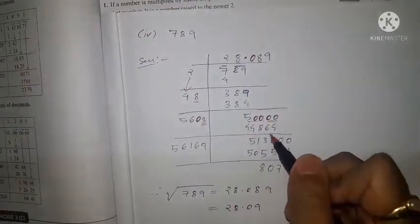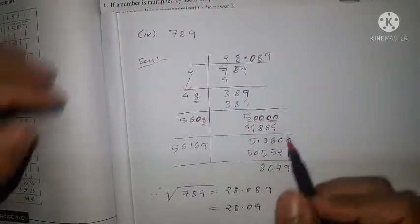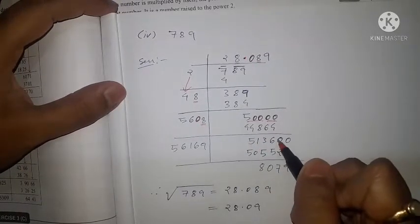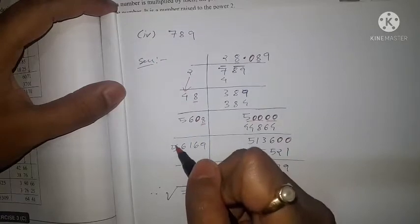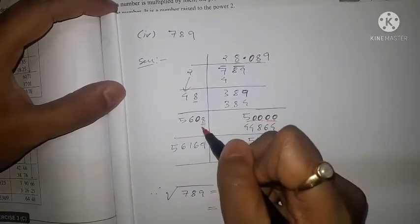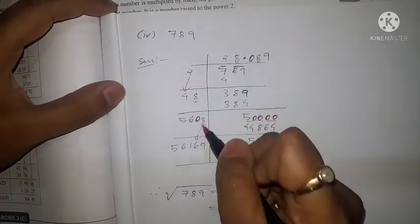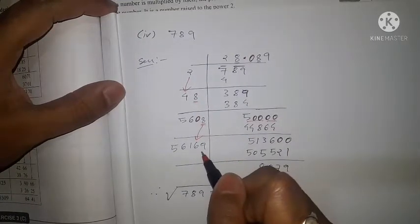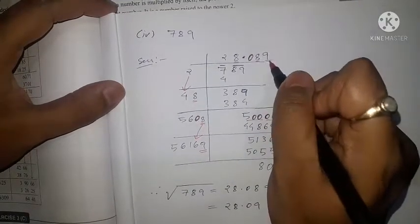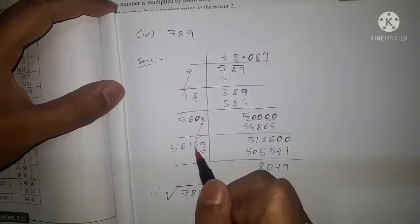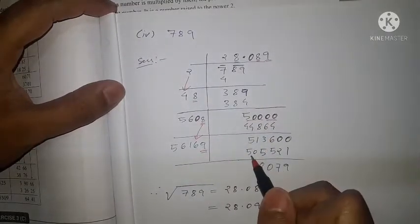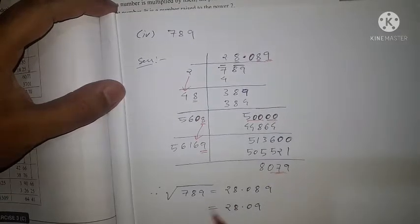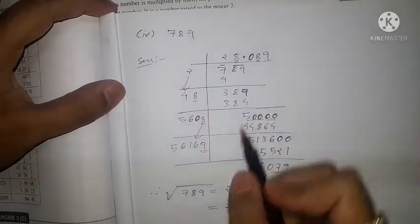After subtraction, the remainder is 5136. Again two zeros come down. The 8 is doubled to 16; write 6 and carry 1, so 1 + 0 = 1, giving the divisor 5616. Whatever number we multiply here, the same number we write here: 5616 × 9 = 50552, giving a remainder of 5521.